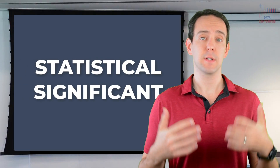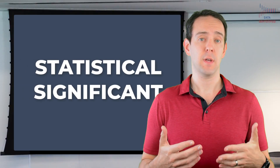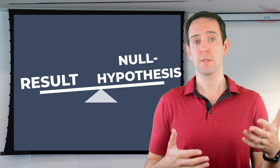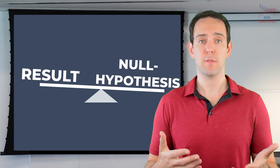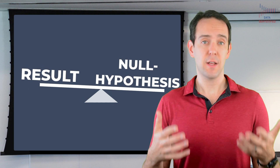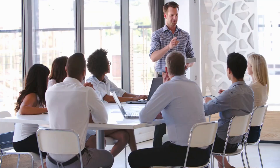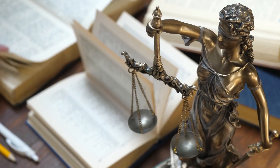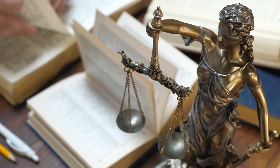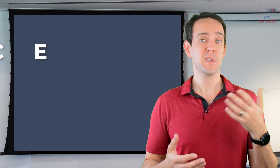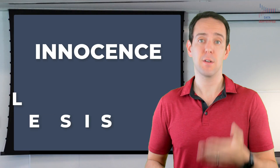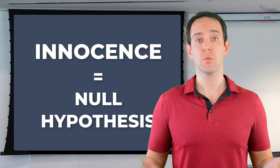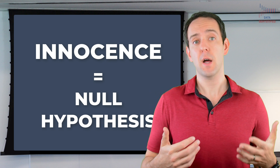When I say that something is statistically significant, I'm comparing the result of some kind of analysis to what is called a null hypothesis. A good analogy to help understand what a null hypothesis is, is a jury looking to convict a defendant or not. Our legal system uses the idea of innocence until proven guilty — with statistics, that innocence is the null hypothesis. It's the idea we assume to be true until evidence is presented to show us that it's not.